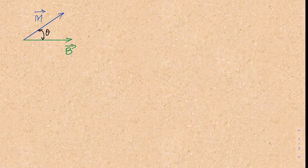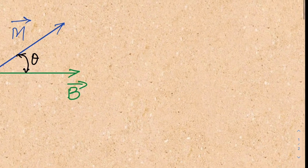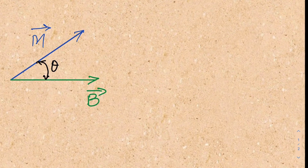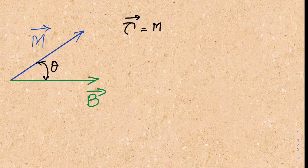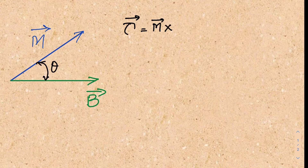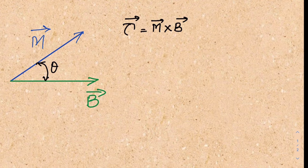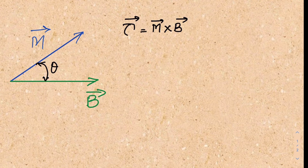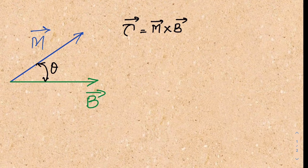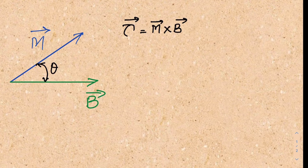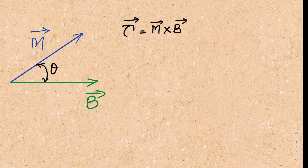So now the torque on this magnetic dipole — we can easily calculate this torque. This torque comes from m cross B, i.e., the dipole moment cross B. This torque comes from mB sin theta. This torque comes from the cross product rule: from m-head to B-head, we will go right hand.